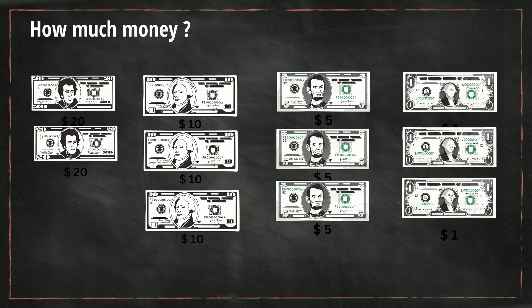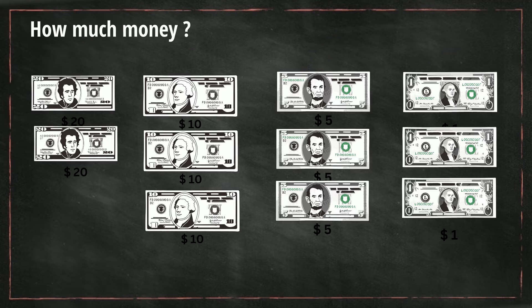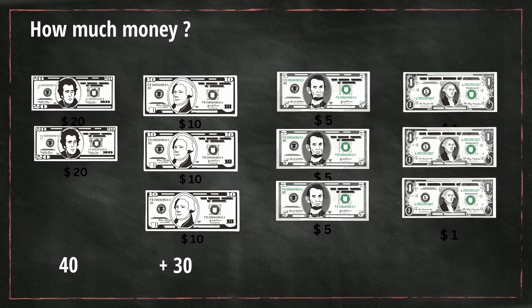For this next example, we have two twenty dollar bills, three ten dollar bills, three five dollar bills, and three one dollar bills. Let's total the twenties first: 20 plus 20 is 40. Three ten dollar bills: 10, 20, 30. Plus three five dollar bills: 5, 10, 15. And then three one dollar bills, which is 3. When you total all this up, that gives you $88.